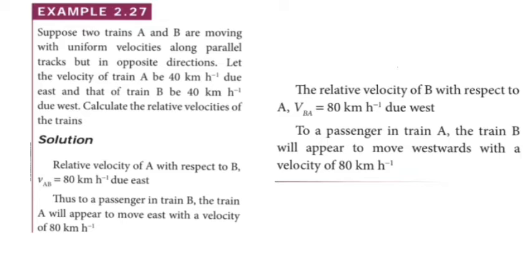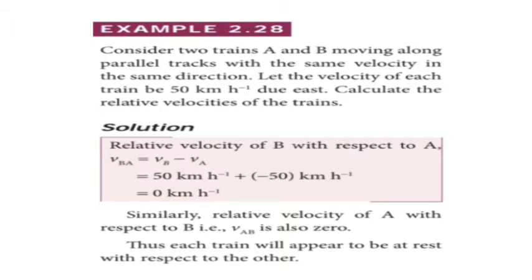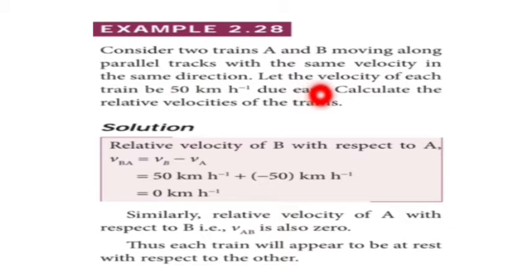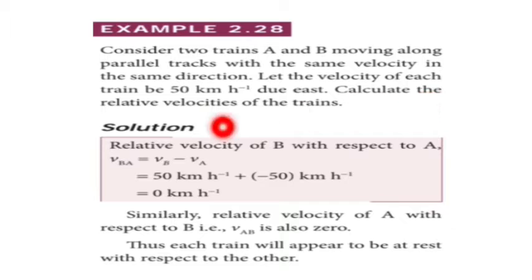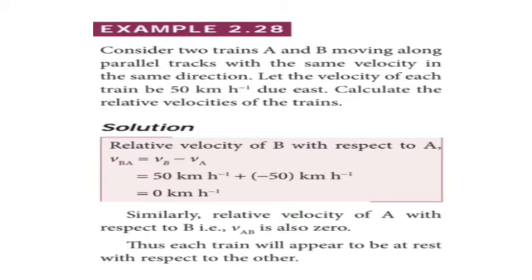Next, example number 2.28. Consider two trains A and B moving along parallel tracks with the same velocity in the same direction. The velocities and direction of both trains are the same — each is 50 km per hour, both traveling east. Calculate the relative velocities of the trains. This is special case number one of relative velocity.